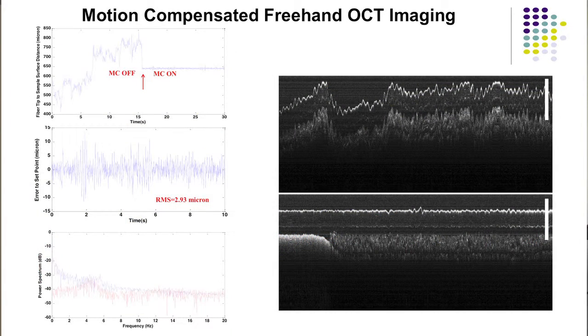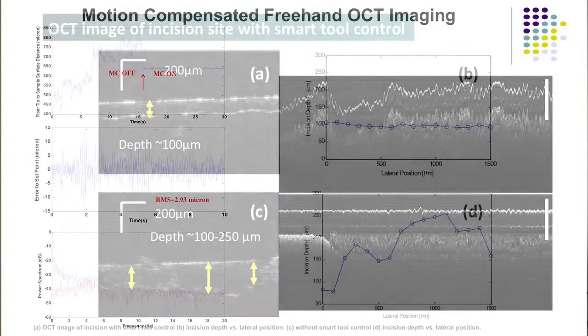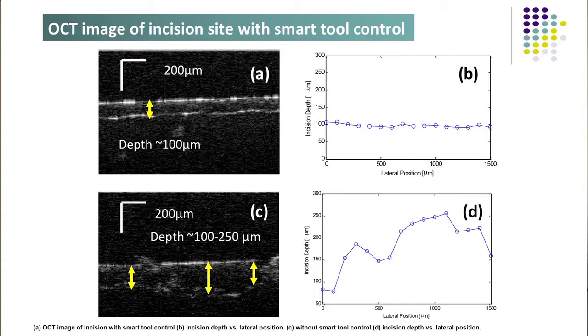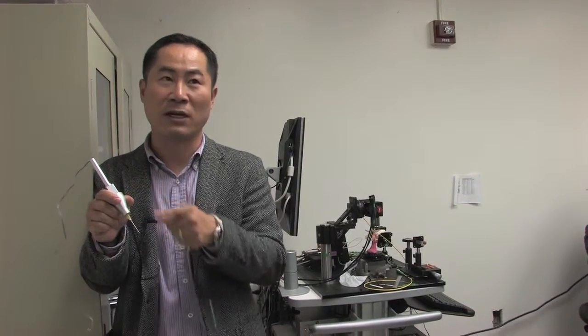What this tool would do is the surgeon will use it like a normal surgical pick, but without them really getting involved with it, it knows exactly how far you are from the retinal surface. You can sense the movement of the hand, because when it moves, the distance between the tool tip and the retinal surface changes. Using OCT, we can actually see how much it moves, and using the motor, we can compensate for those movements.